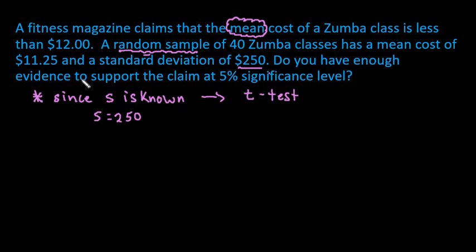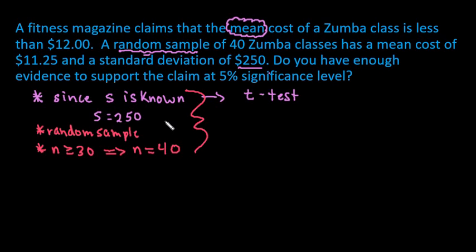Remember, in order to use this, you have to have a random sample, which we do. And we have to have a sample size greater than or equal to 30, or it has to be normally distributed. This one is met since N equals 40. These are known as the assumptions and conditions. Check your textbook to see if they are different. These are listed in the textbook I currently teach from, but I know there are alternative conditions or different ones listed in different texts.